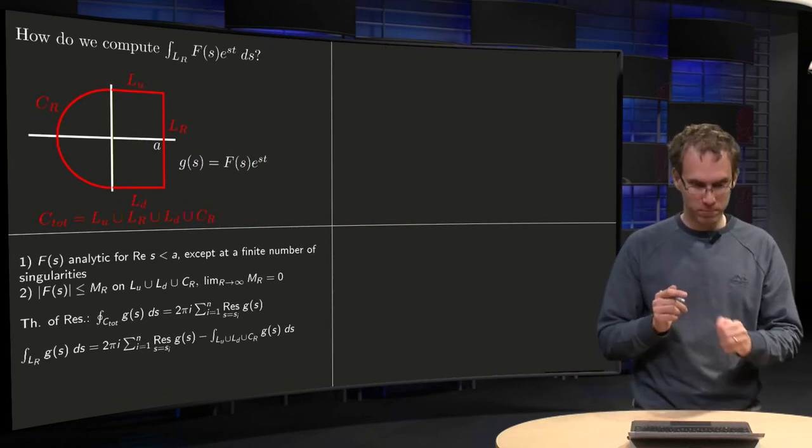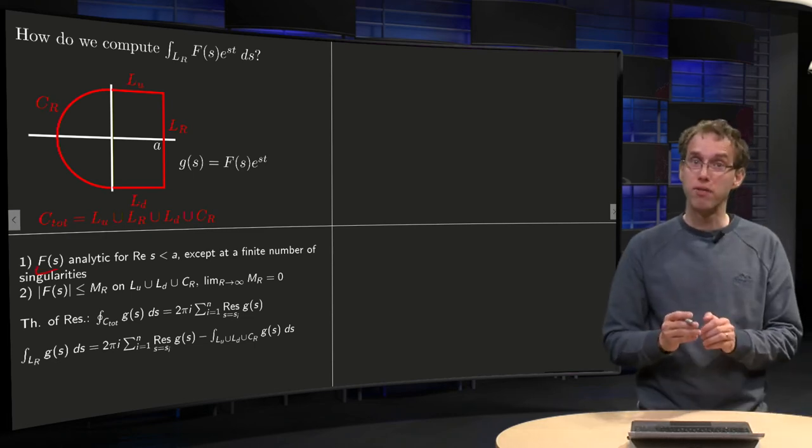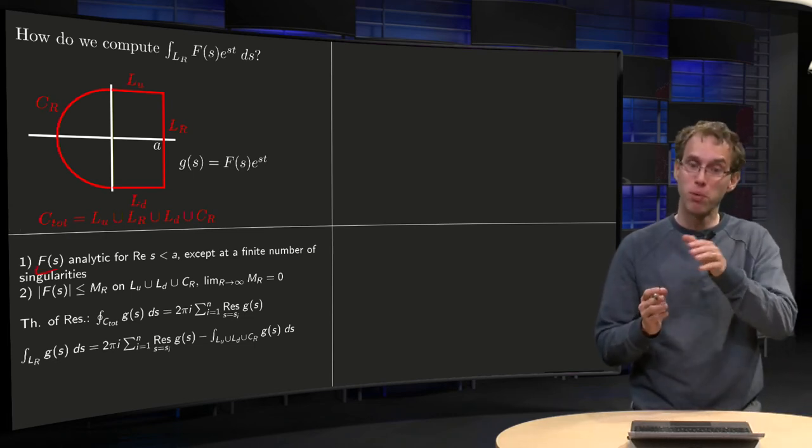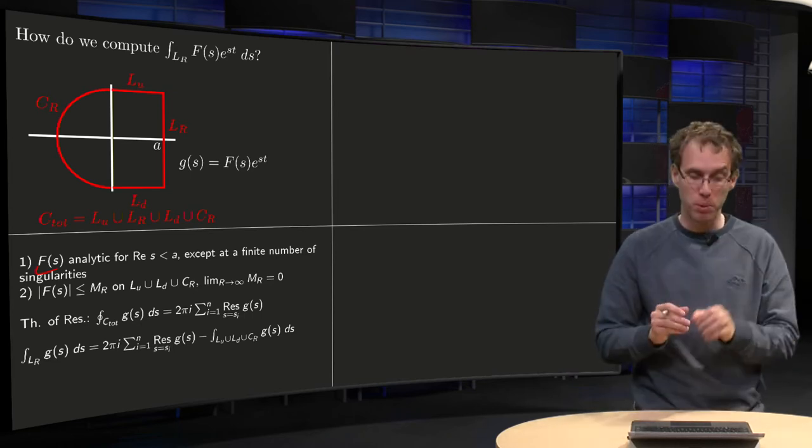When can we do this? Well, suppose capital F(s) analytic for the real part of s smaller than a, except at a finite number of singularities, so you will have some poles inside.